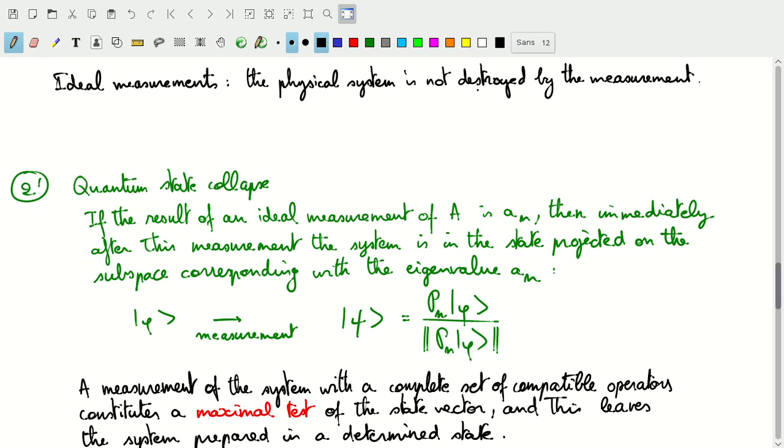So what the quantum state collapse postulate says is that if the result of an ideal measurement of A is one of the eigenvalues of A, then immediately after this measurement the system will be in the state projected on the subspace corresponding with that eigenvalue.